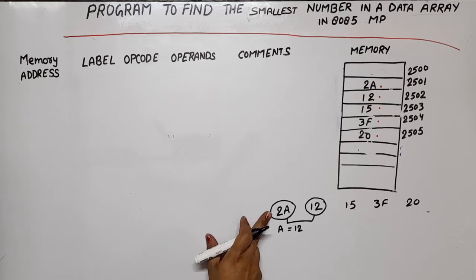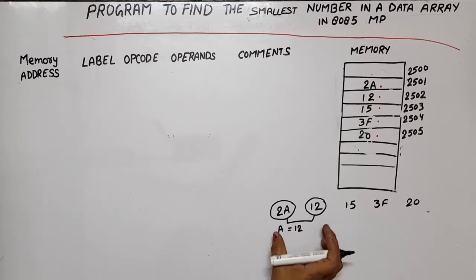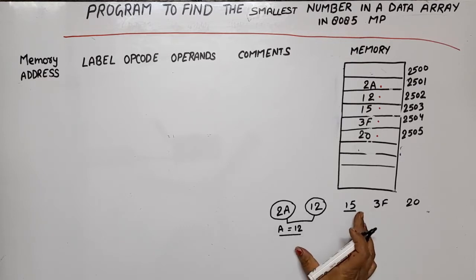This result will be compared with the third number. Of these two, we will keep the smallest in the accumulator. In this case, 12 was in the accumulator, and after comparison, 12 is still the smallest, so 12 remains in the accumulator.